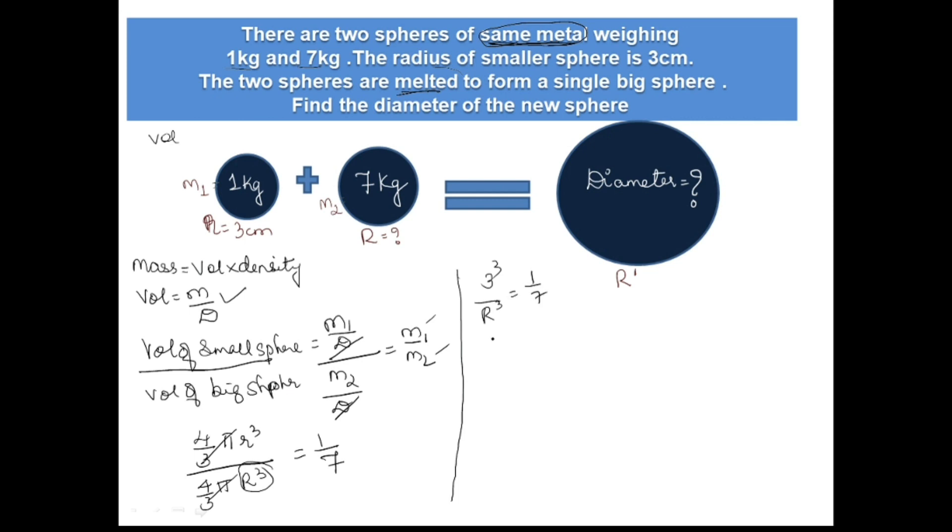So small r is 3, so 3³ divided by capital R³ equals 1/7. From here we get R³ equal to 27 × 7, that is 189. Now 189 is not a perfect cube number, so finding it in decimal is difficult. Let us leave it as it is.